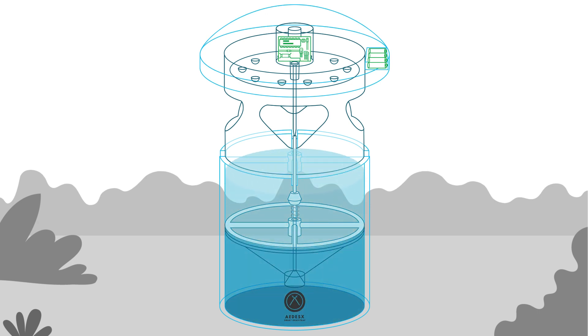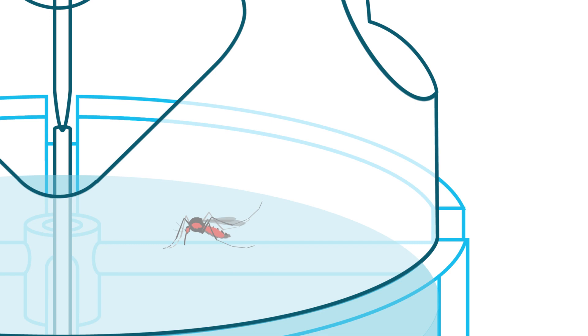When filled with aged water, the Aedes X Smart Gravitrap is naturally an attractive ideal breeding location for Aedes mosquitoes. She enters through the openings of the trap and lays her eggs on the surface of the water.